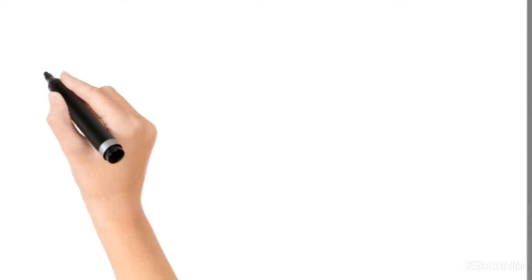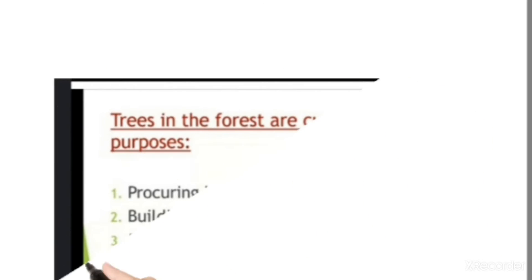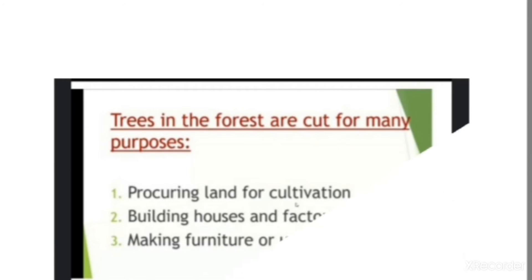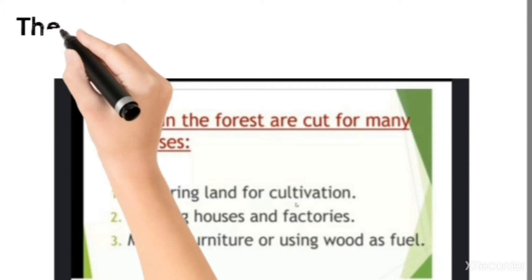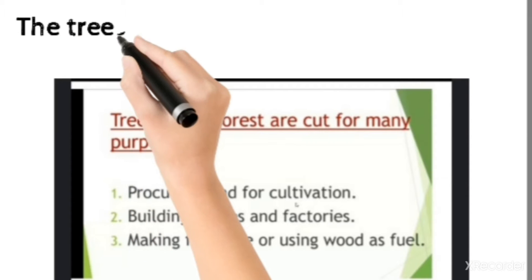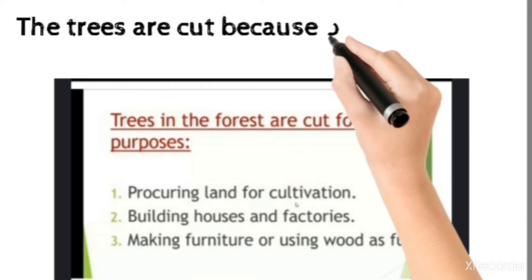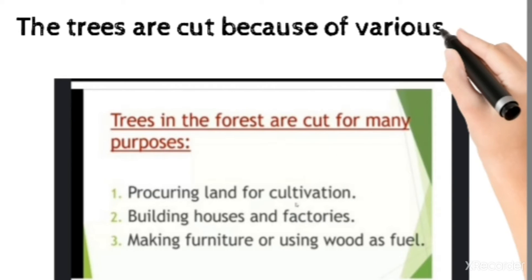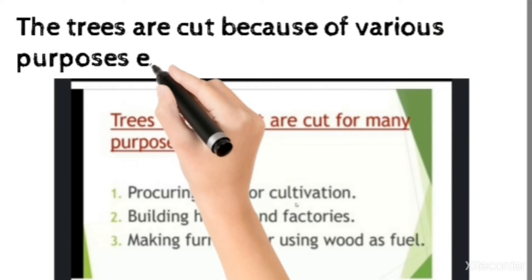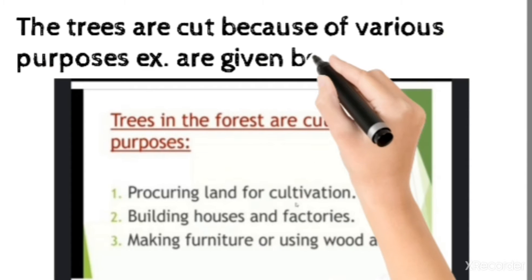Deforestation is also done to use forest products. Trees are cut down for preparing land for irrigation, agriculture, building houses and factories, making furniture, or using wood as fuel.